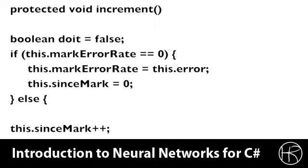So if it is zero, then we set it to the current error. And we count the number of iterations since we last marked the error rate. Because we're going to loop up to 10,000 iterations per time that we increment the hidden neuron count. If the error rate is not zero, then we set the sense mark to one higher. We do the sense mark plus plus as you see near the bottom of the screen.